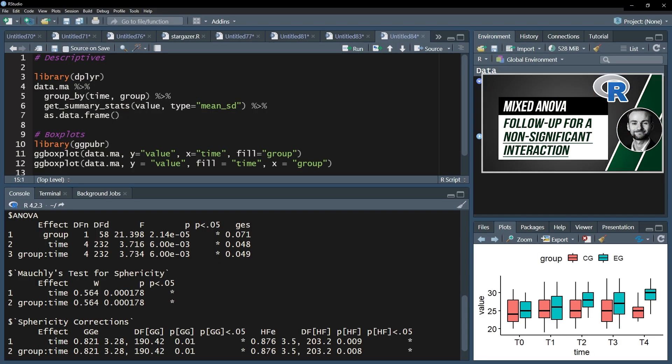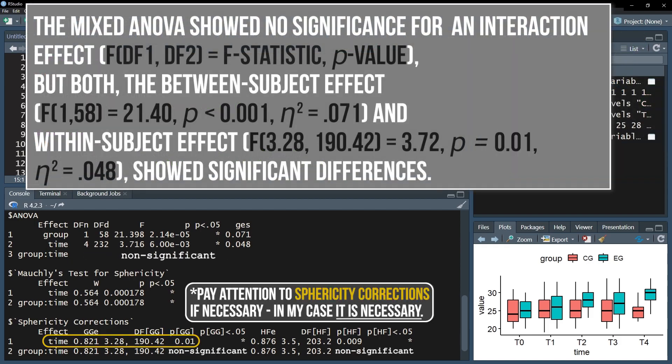Scenario 3. In case your interaction effect is not significant, you will report main effects regardless of significance or not. Additionally, you will also report the non-significance of the interaction effect.